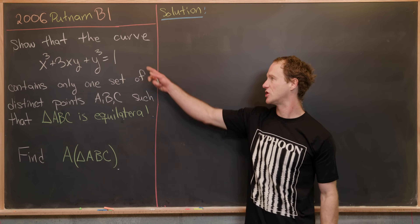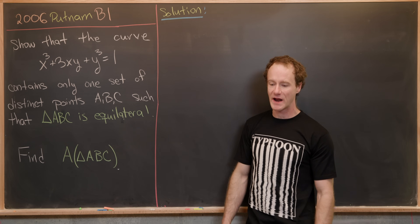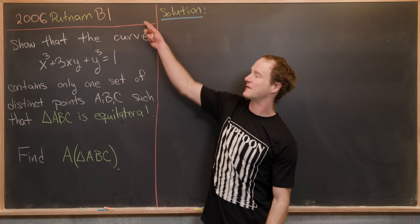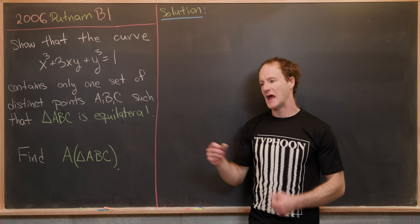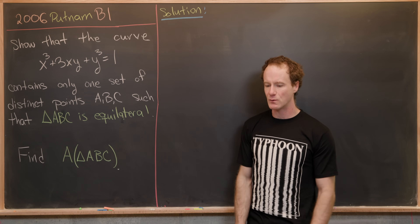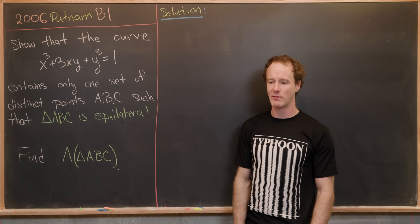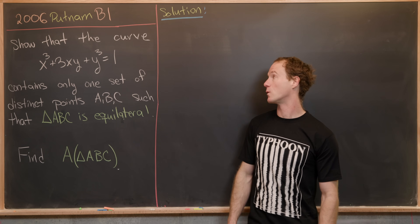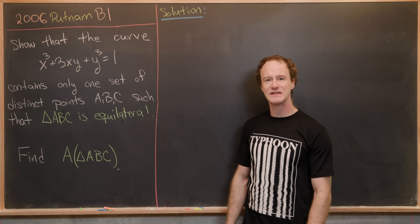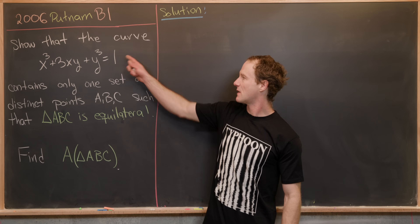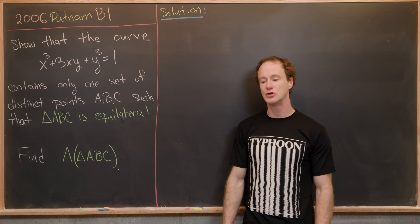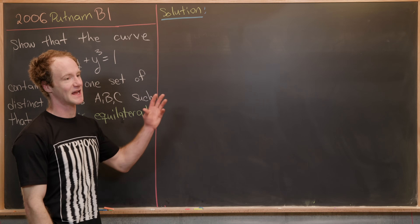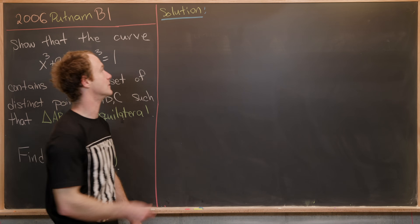In general a cubic curve is going to be quite complicated. Along with the fact that this is question B1 — and A1 and B1 are generally the easiest problems on the Putnam — that means there's probably some simplification here. So keeping in mind that this is a polynomial in two variables, we'll attack this like a polynomial: set it equal to zero and see what we can do.